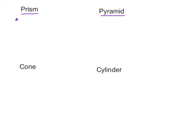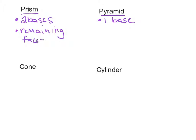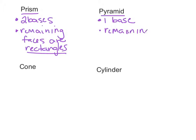In a prism, there are two bases, and in a pyramid, there's only one base. In a prism, the remaining faces are rectangles, and in a pyramid, the remaining faces are triangles.